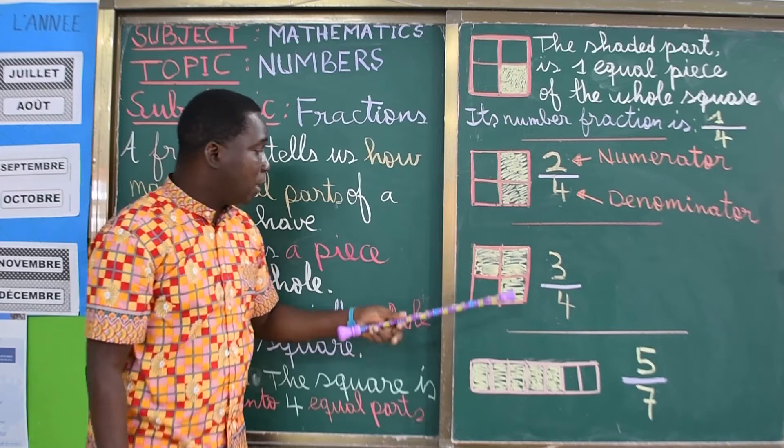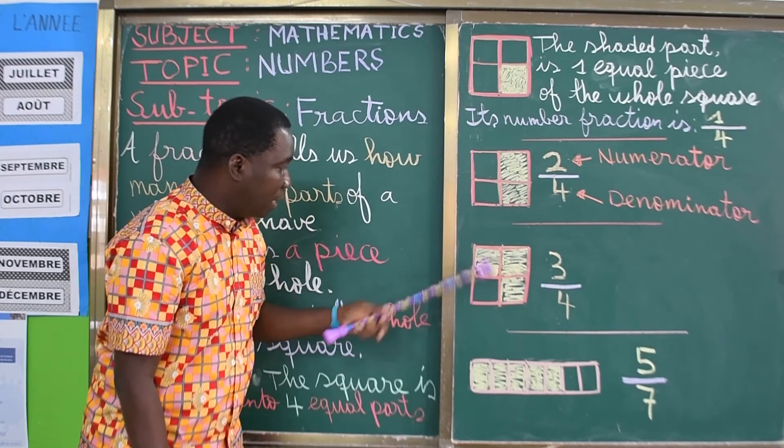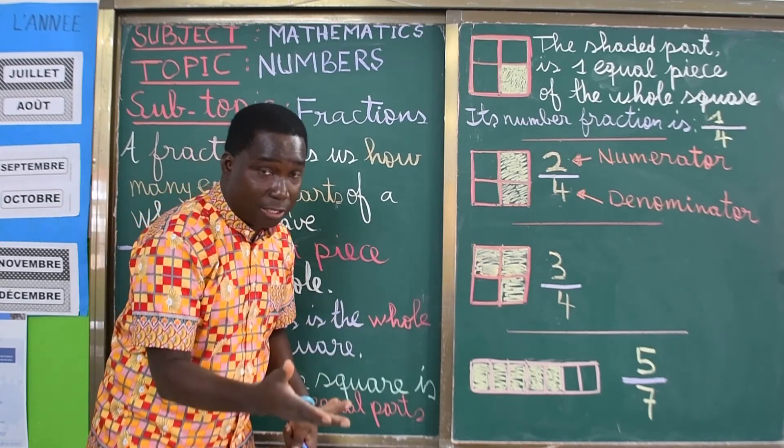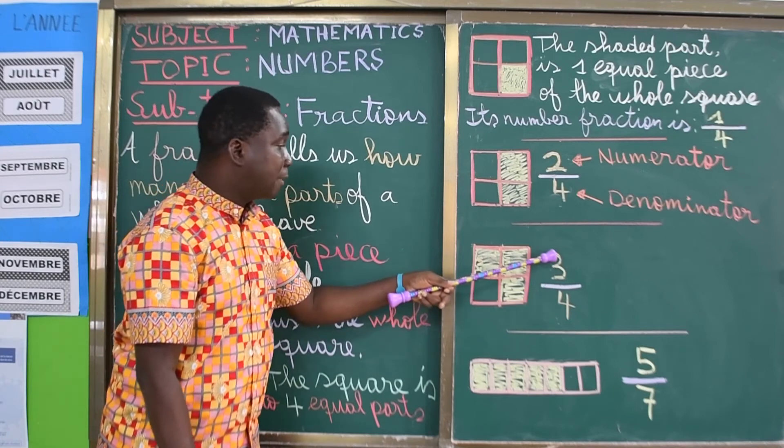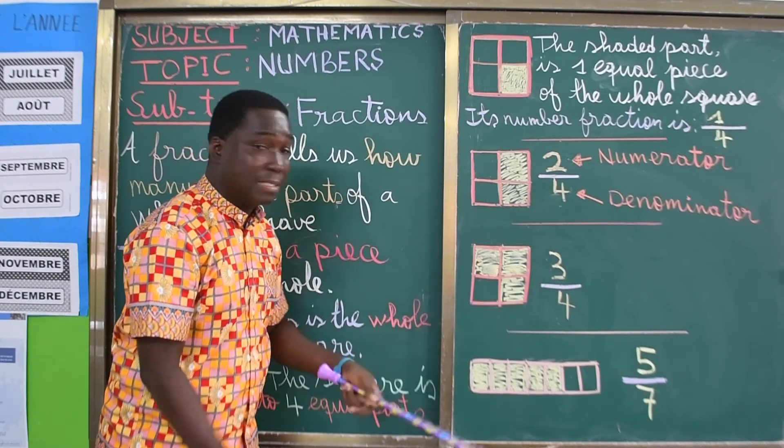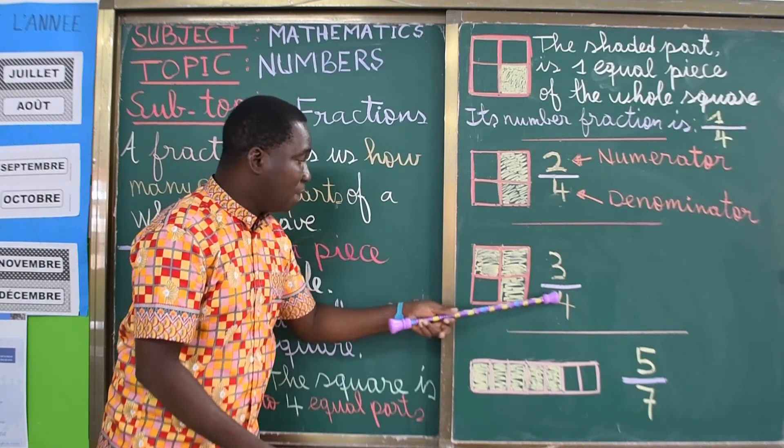For instance here, we have one, two, three parts that have been shaded. So we call it three over four to express that fraction.